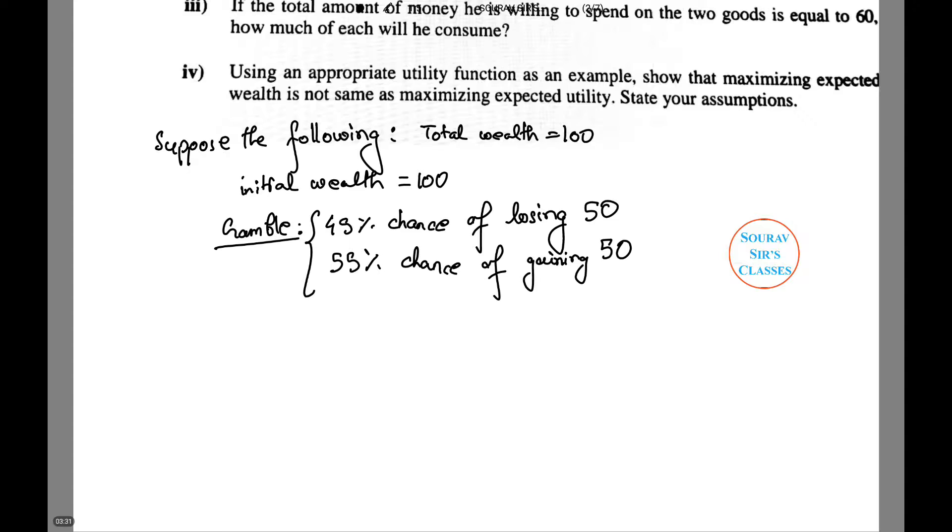For this, we will assume the total wealth is 100 and initial wealth is 100. There is a 45% chance of losing 50 and a 55% chance of gaining 50 in a gamble. Let the utility function be U(W) equals square root of W.